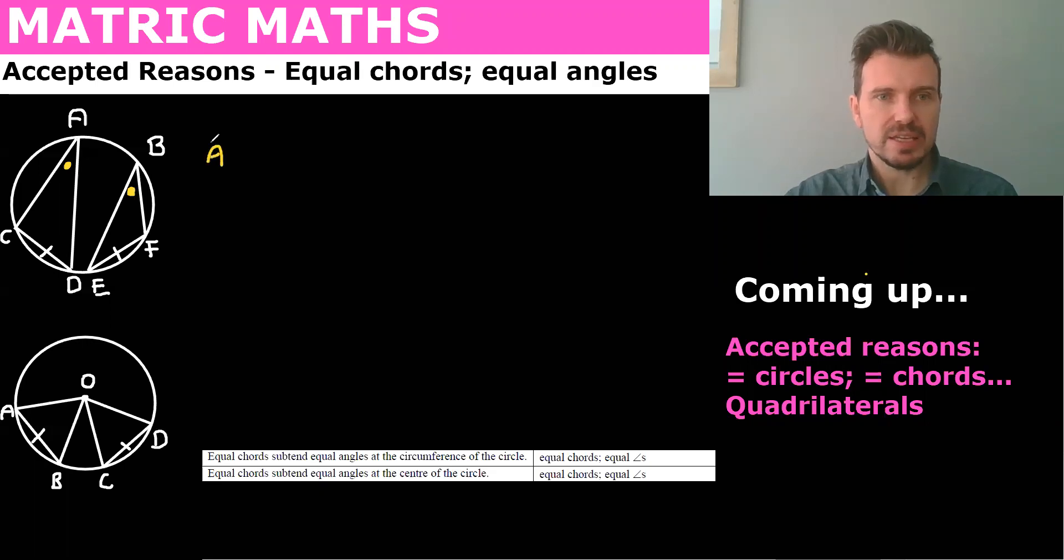So we know that A equals B and the reason is equal chords, equal angles.